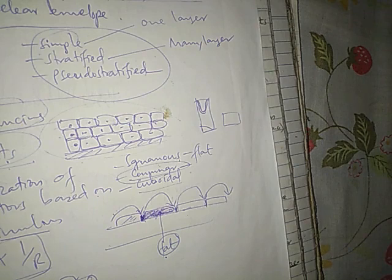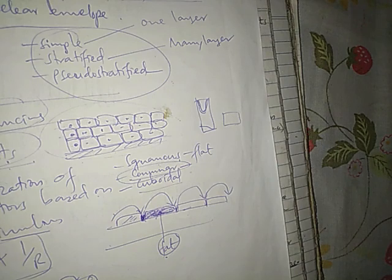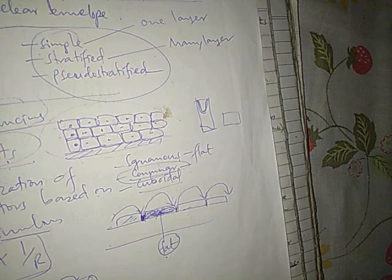At the anorectal junction it changes from simple squamous to stratified columnar, and at the esophago-gastric junction it changes from stratified squamous to simple columnar. This is because the stomach contains glands that release enzymes for digestion. Also, simple columnar, being one layer, provides easier transport or absorption of material.